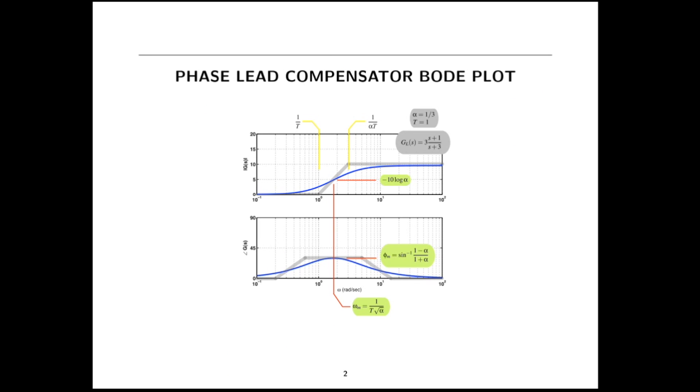Now here's a Bode plot of just the compensator. What I've done is I've made a Bode plot for this particular transfer function 3 times S plus 1 over S plus 3, which is really just a phase lead compensator with an alpha of 1 over 3 and a capital T of 1. I have generated a MATLAB Bode plot in blue then overlaid on top of it the approximate sketch that you would get using some of the asymptotic sketching rules.